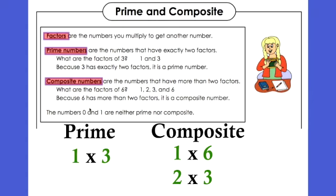Just an aside: the numbers 0 and 1 are considered neither prime nor composite. Prime numbers have only one set of factors — 1 and itself. Composite numbers have more than one pair. For example, 6 has two pairs. You can have some numbers like 12 or 24 that have lots of pairs of factors, and we're going to work on some of those today.